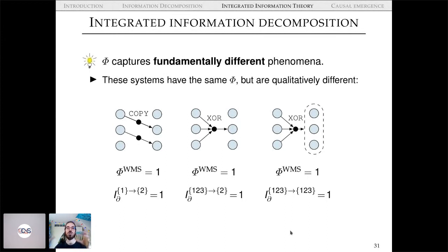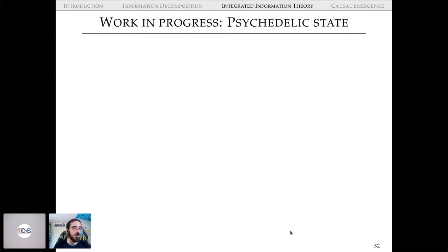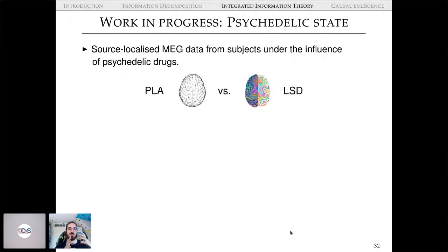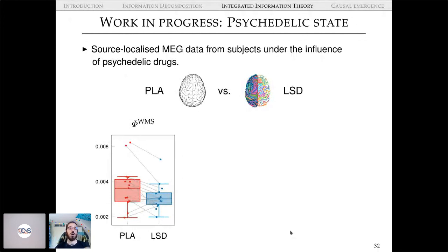While it might sometimes be convenient to use a scalar measure like Φ, with Φ-ID we have tools to open up this aggregate measure and look at which information phenomena are expressed. As a quick preview of work in progress: we've been applying these measures to MEG data from subjects in the psychedelic state, comparing placebo versus LSD brains in subjects having intense psychedelic experiences.